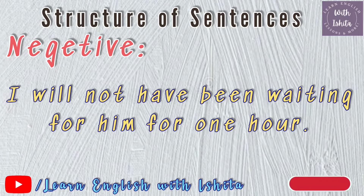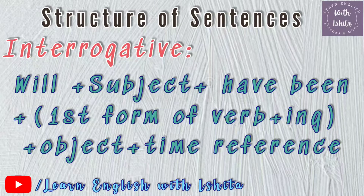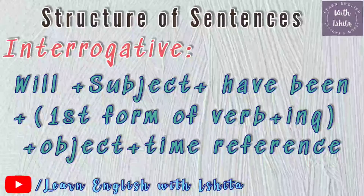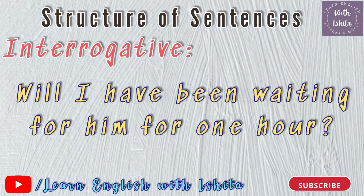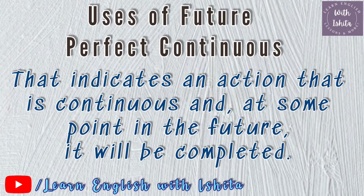For interrogative sentences, the structure is: Will + subject + have been + verb + -ing + object + time reference. Interrogative sentences start with the auxiliary verb 'will', and 'have been' is used after the subject. Example: 'Will I have been waiting for him for one hour?' This future perfect continuous tense indicates an action that is continuous and will be completed at some point in the future.